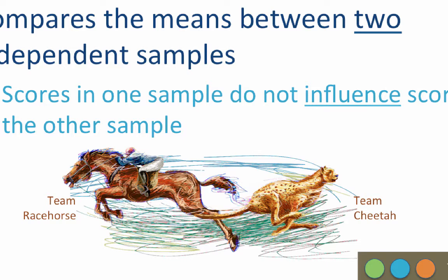Now if you had the cheetahs running right next to the racehorses, and the horses were scared of the cheetahs, so they let the cheetahs run away, well those scores would not be independent. Or if your cousin Vinny conspired with the cheetahs to throw the race, those scores would not be independent. In fact, you would have a confounding variable.